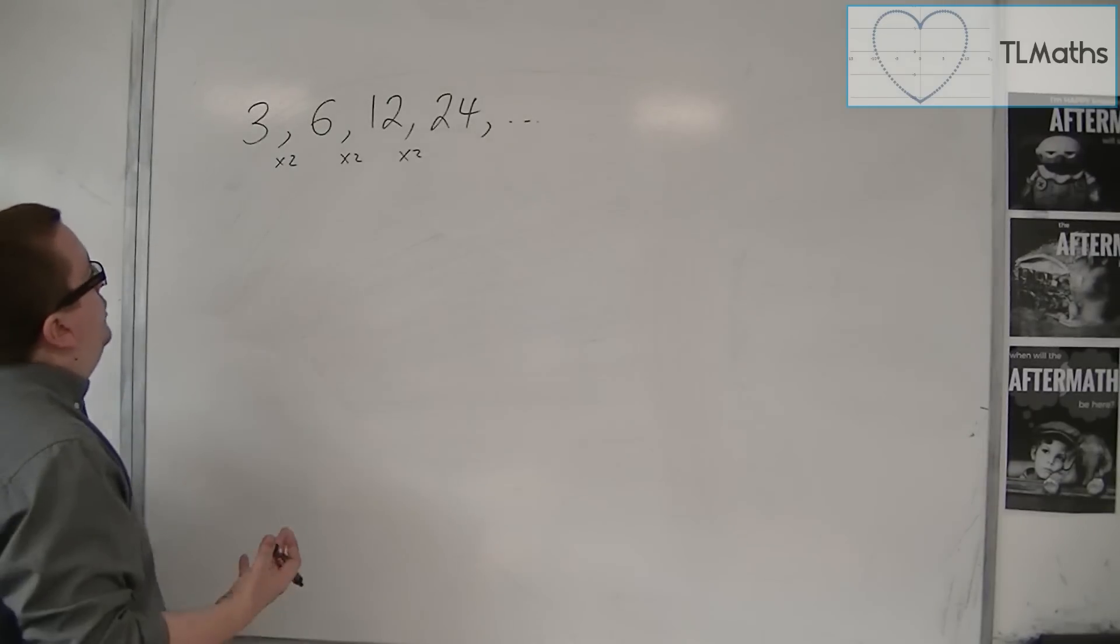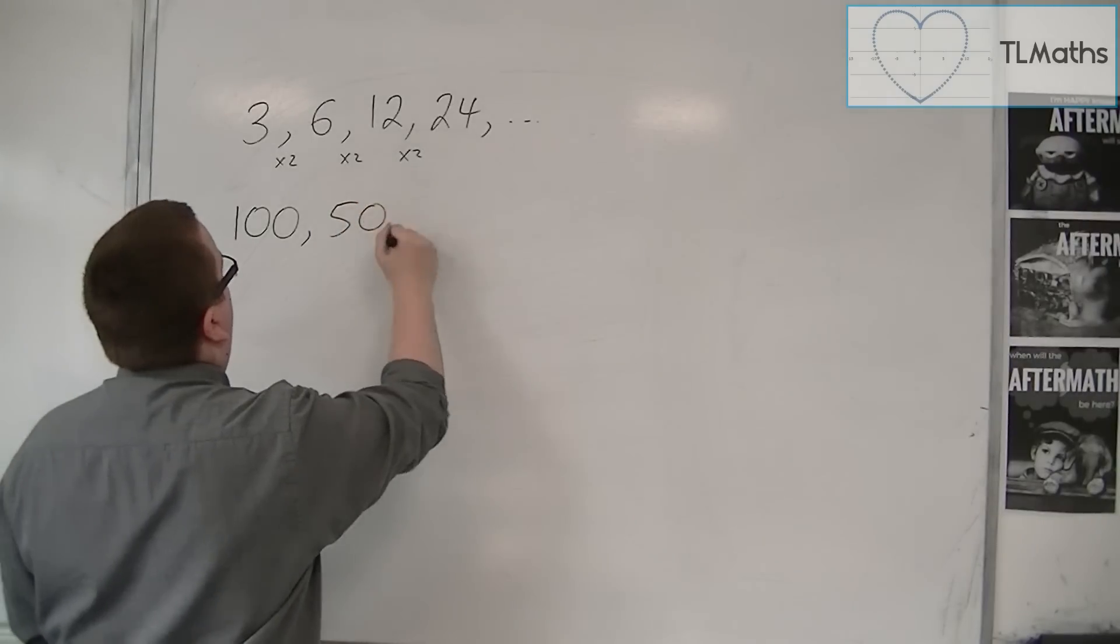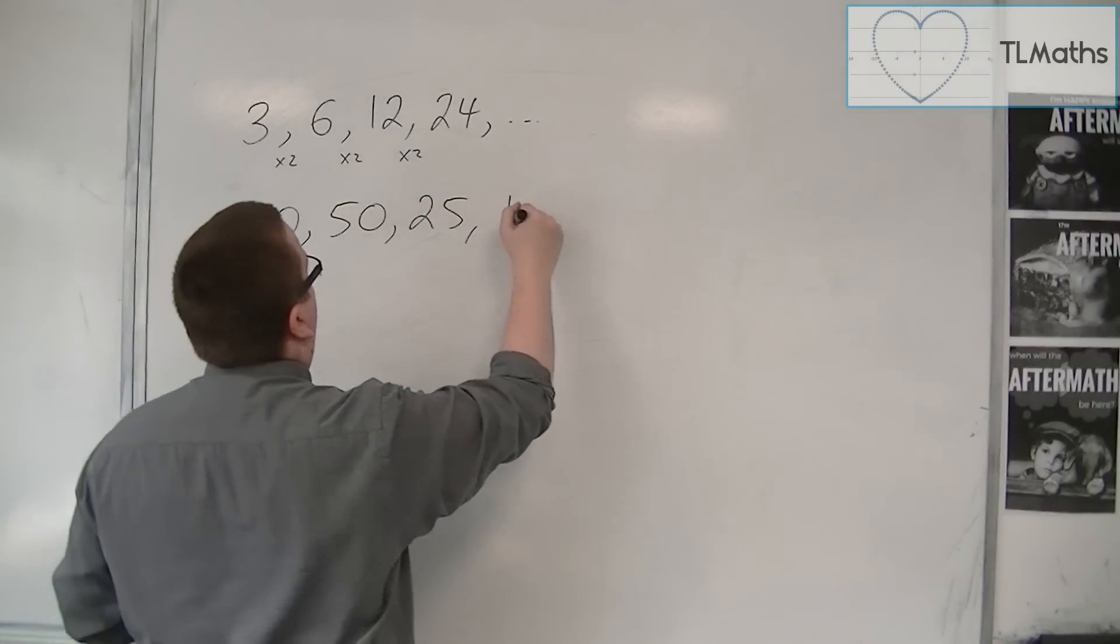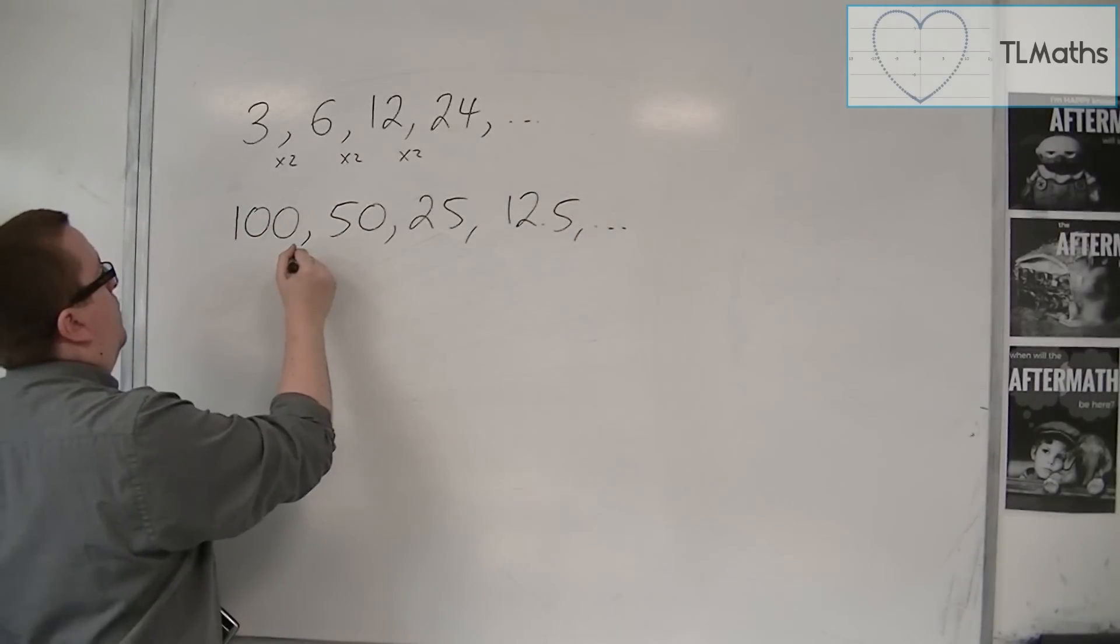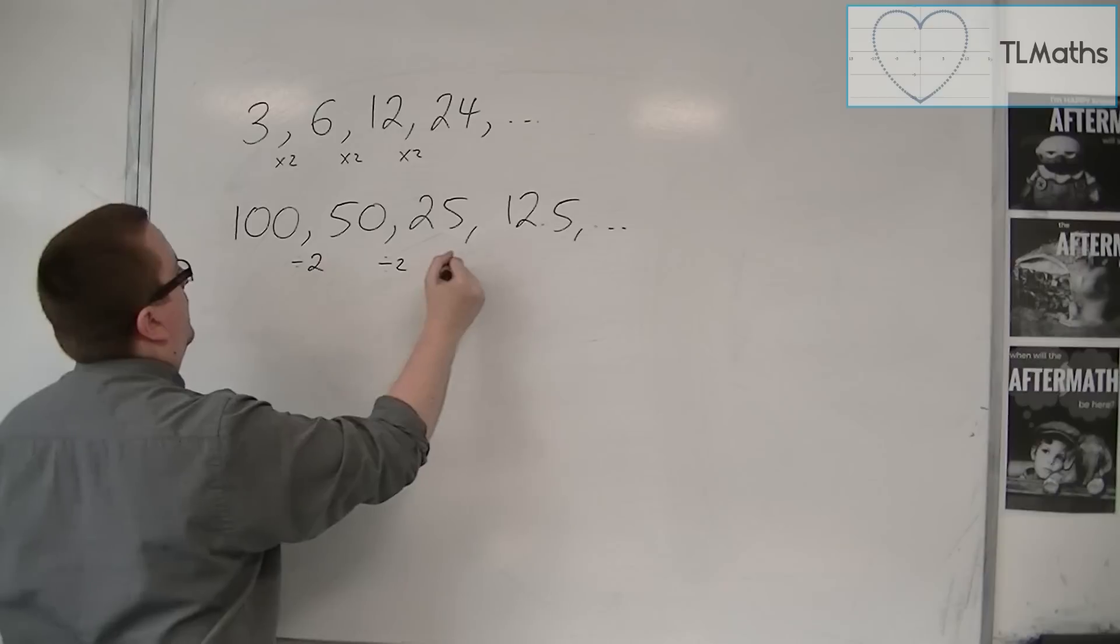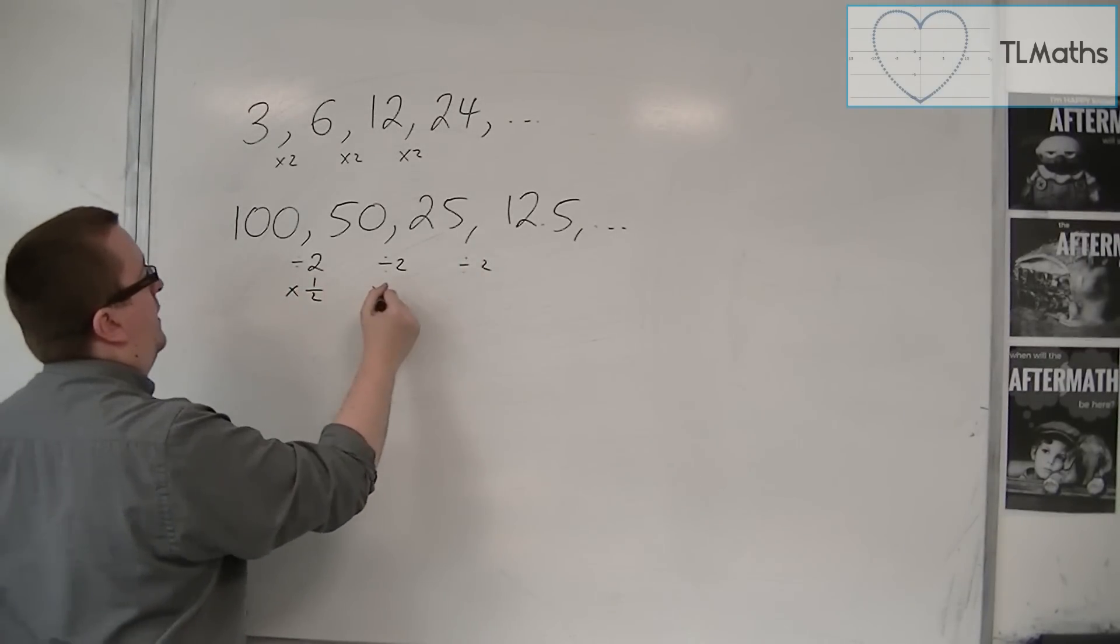Alternatively, you could have 100, 50, 25, 12.5, etc. Where in this case, I'm dividing by 2. Now, you can either see that as dividing by 2 or multiplying by a half.